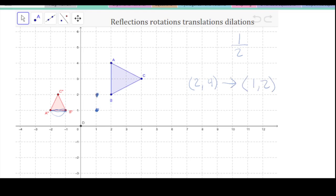And then this point, which is at 4, 3, is going to, if I cut that in half, that'll go to 2 and 1.5 or 1 and a half. Okay, so that's the dilation.